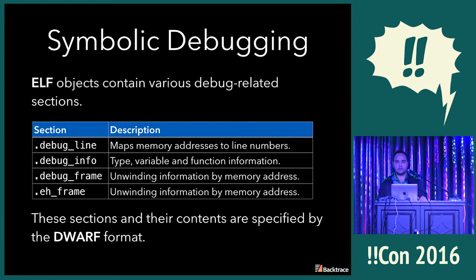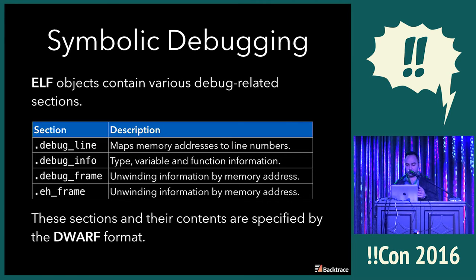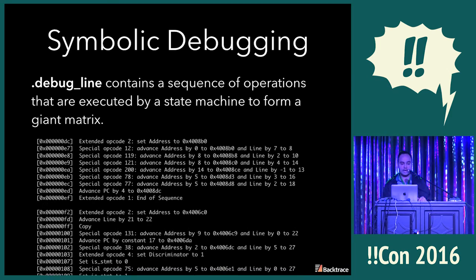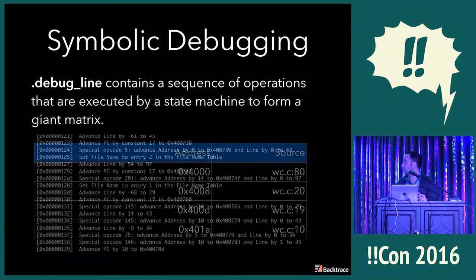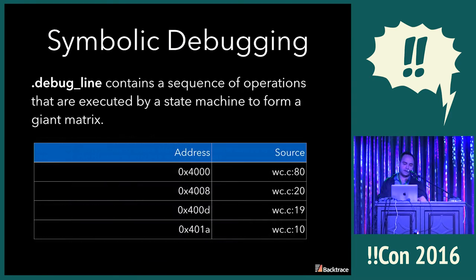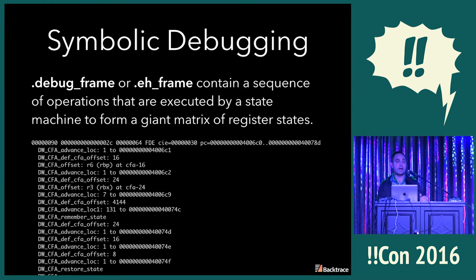That file also contains a whole bunch of debug information, either within the file or some auxiliary file. ELF also has a notion of sections. You have debug_line, which essentially contains a sequence of operations that a debugger executes in a state machine, and that expands into a matrix which contains addresses that map to the source file. You have debug_frame, which tells you how to unwind — what was the caller of the given function, what was the register state, etc.